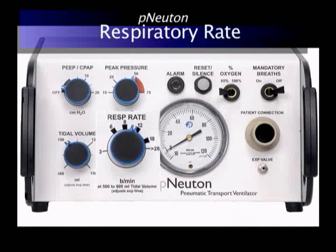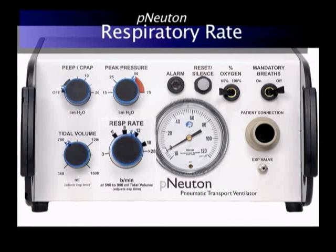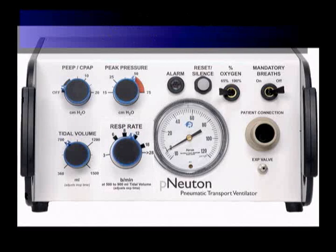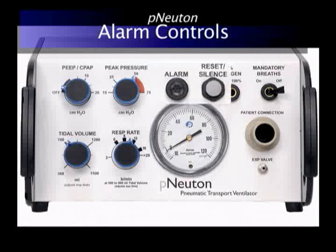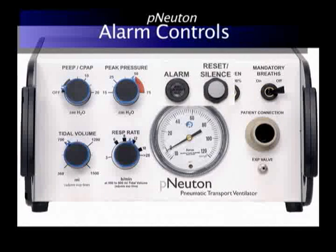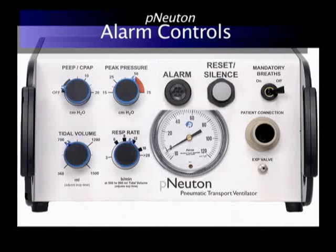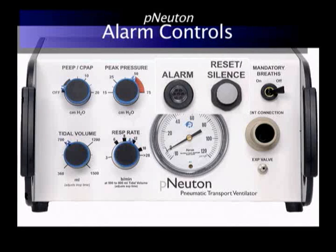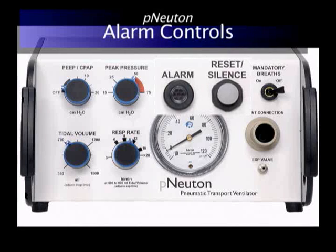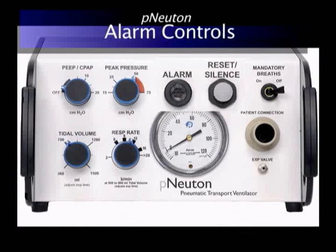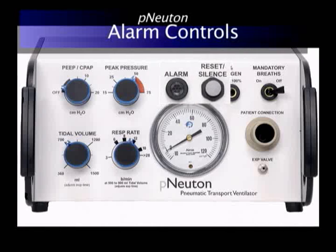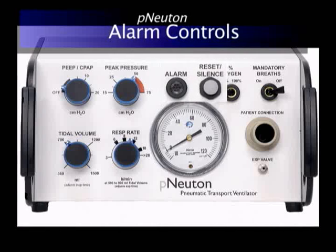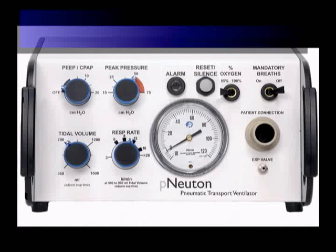The patient mandatory breath rate control has a range of 3 to greater than 28 breaths per minute. The control has a wider range at lower respiratory rates to provide better control for slower IMV rates. Patient respiratory rates should always be monitored to ensure adequate ventilation. The alarm controls include the alarm visual indicator and the alarm reset/silence. The alarm reset silences the alarm for one minute, and the alert condition is activated when a patient disconnect has occurred or when low source gas pressure is detected.